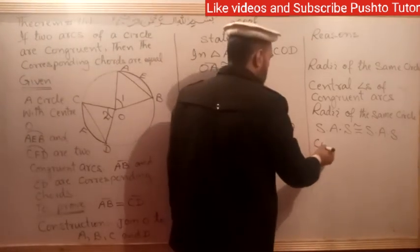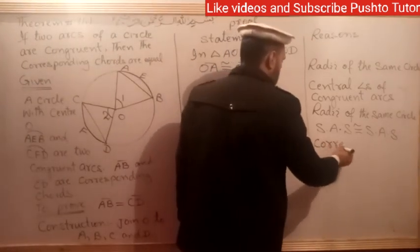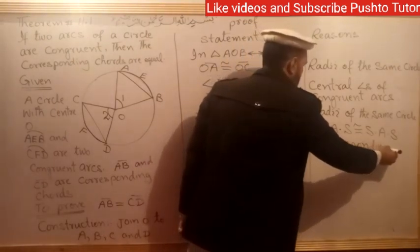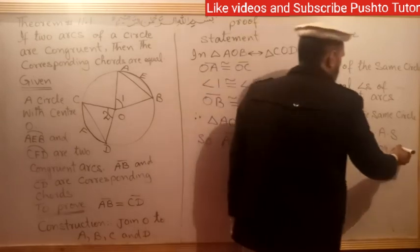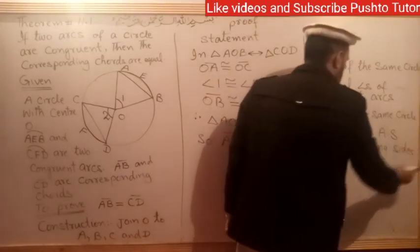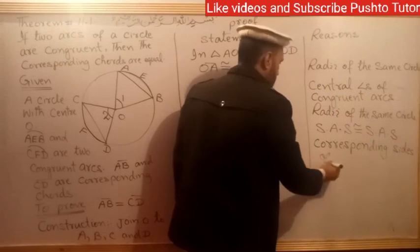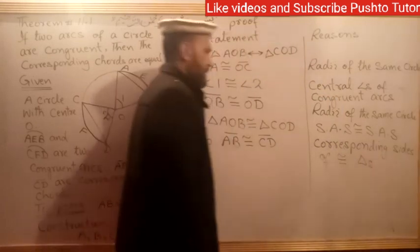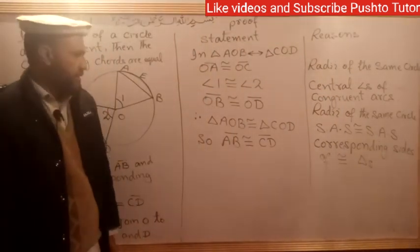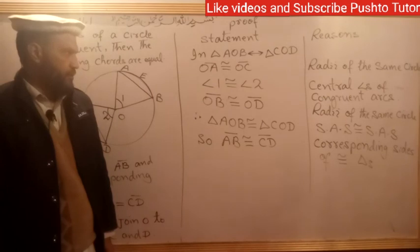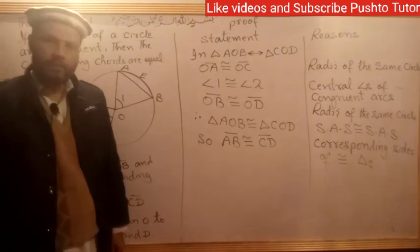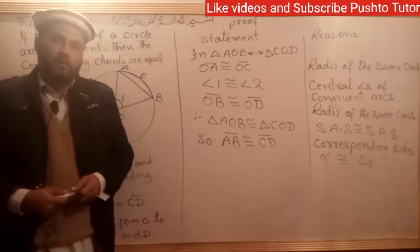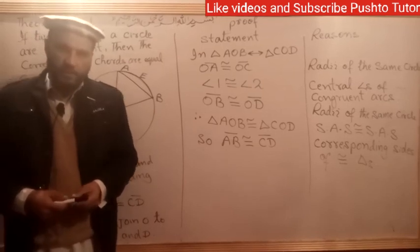Therefore AB = CD, as corresponding sides of congruent triangles are equal. Please like the video and subscribe to our channel Push to Tutor. Thanks a lot.